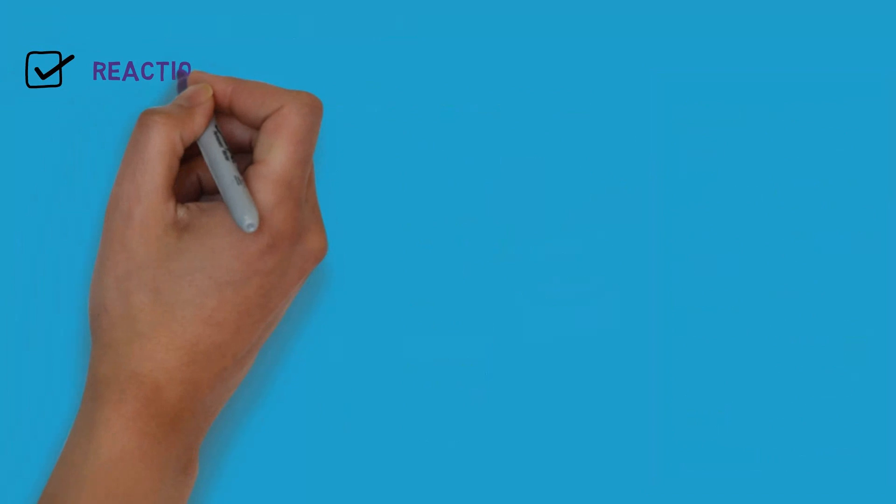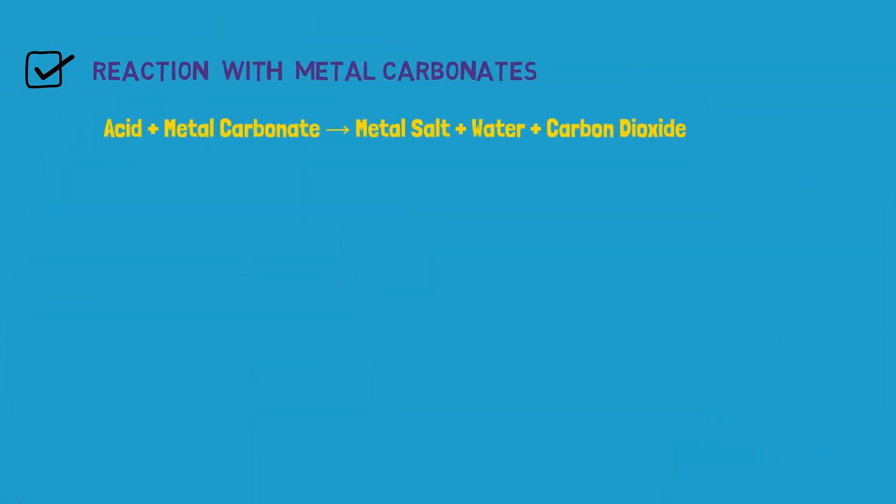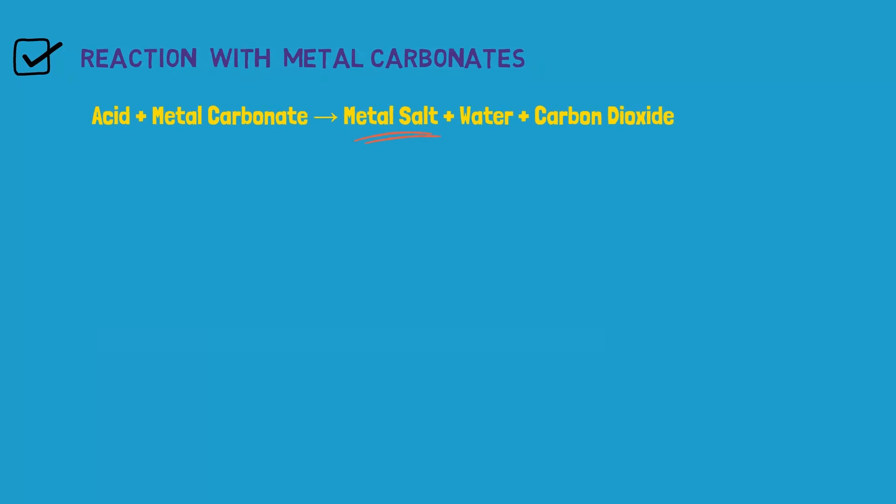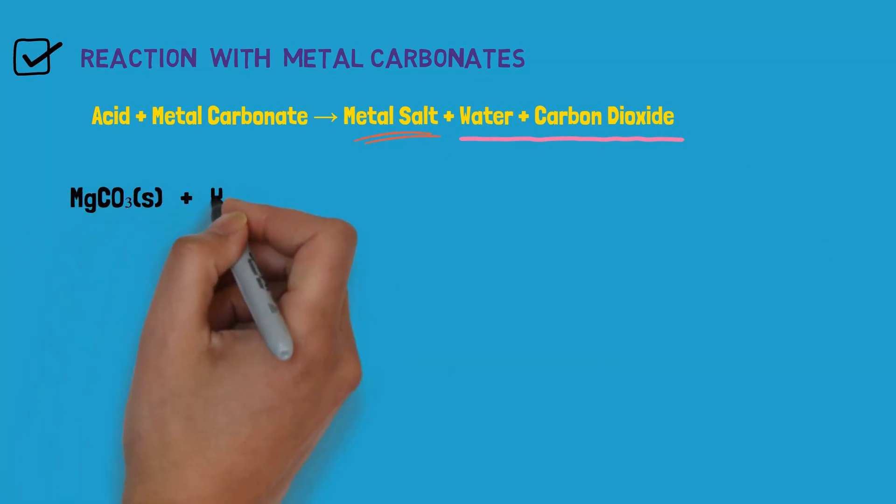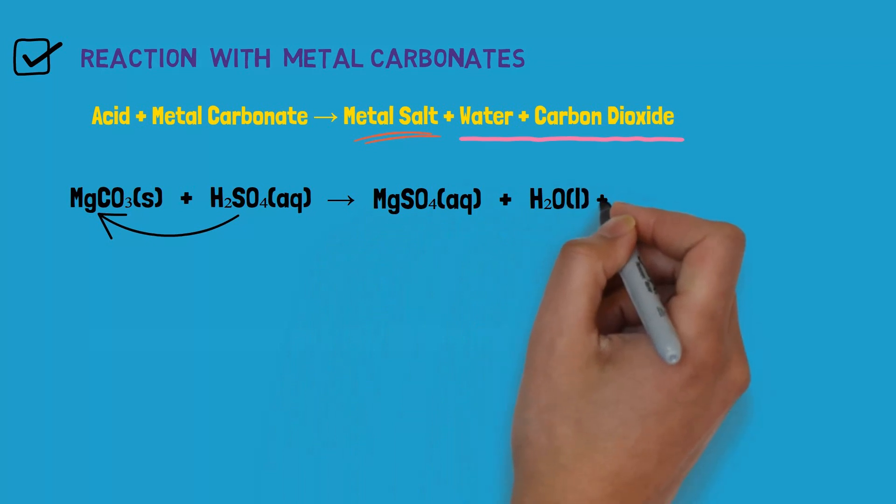Dear students, acids react with metal carbonates, producing their respective salts, water, and carbon dioxide. For example, sulfuric acid reacts with magnesium carbonate to form magnesium sulfate, water, and carbon dioxide.